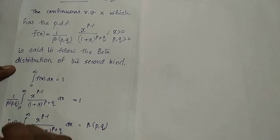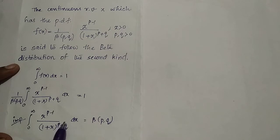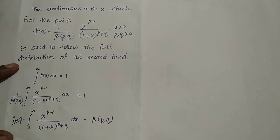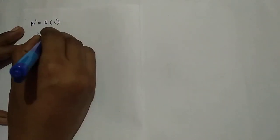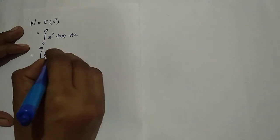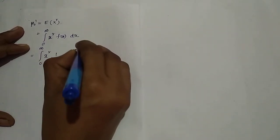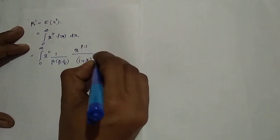Now we derive the rth raw moment. The rth raw moment μ'r = integral from 0 to infinity of x^r · f(x) dx = (1/β(p,q)) · integral from 0 to infinity of x^r · x^(p-1) / (1+x)^(p+q) dx. This is very difficult to integrate directly, so we use a substitution.